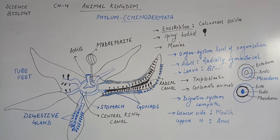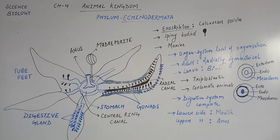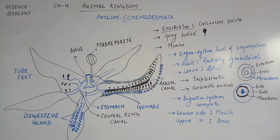Chapter 4, Animal Kingdom. Till the previous video, we have discussed about various phylums such as Porifera, Coelentrata or Cnidaria, phylum Ctenophora, Platyhelminthes, Aschelminthes, Annelida, phylum Arthropoda and phylum Mollusca. In this video, we will discuss about the phylum Echinodermata.